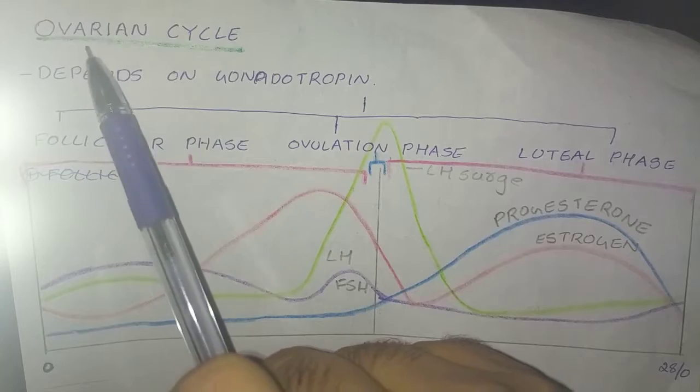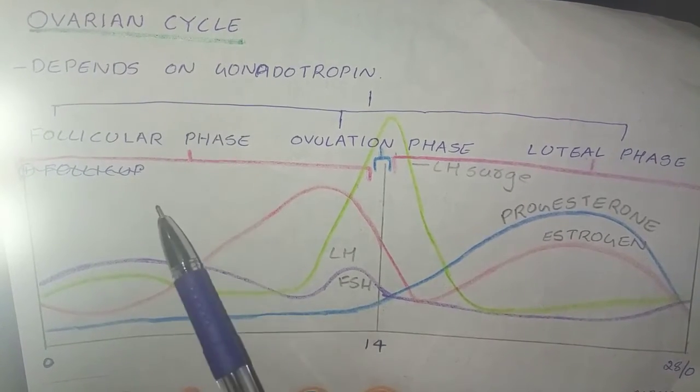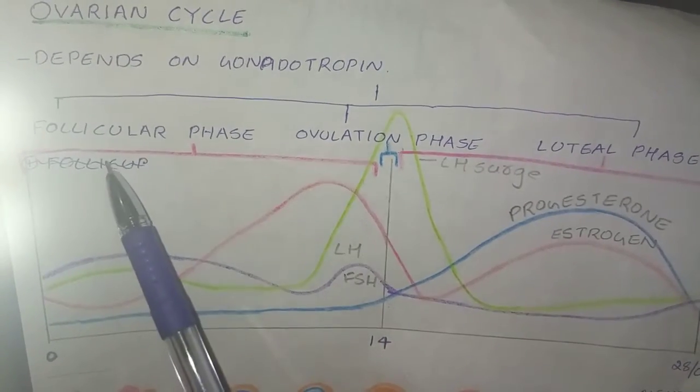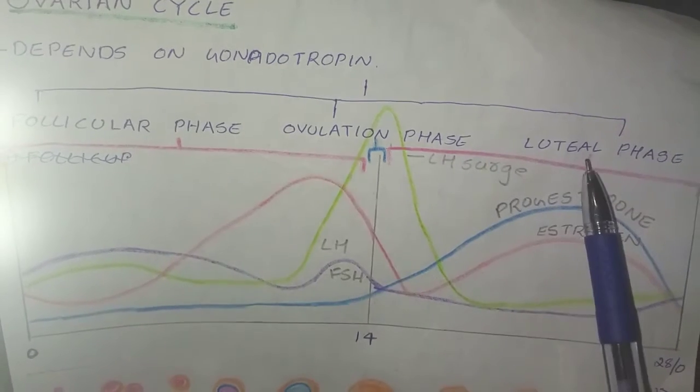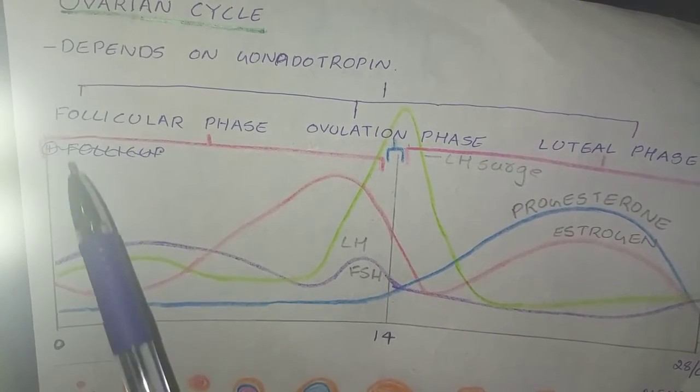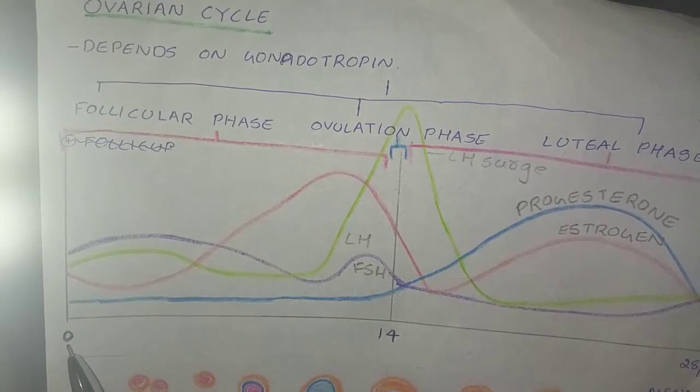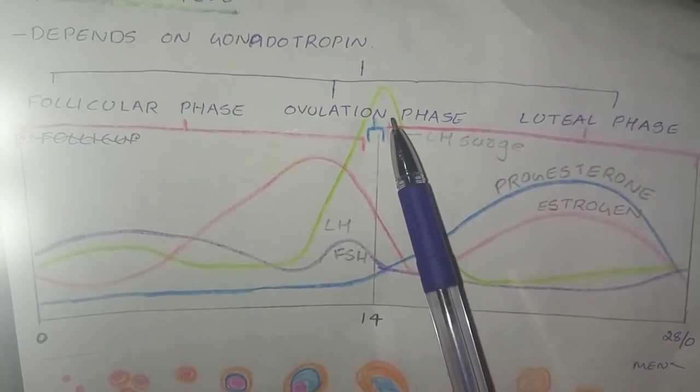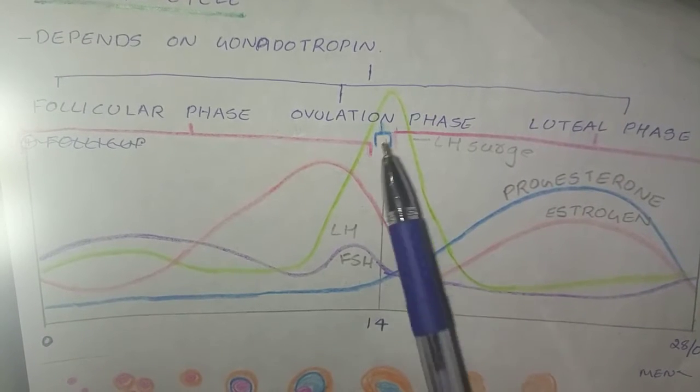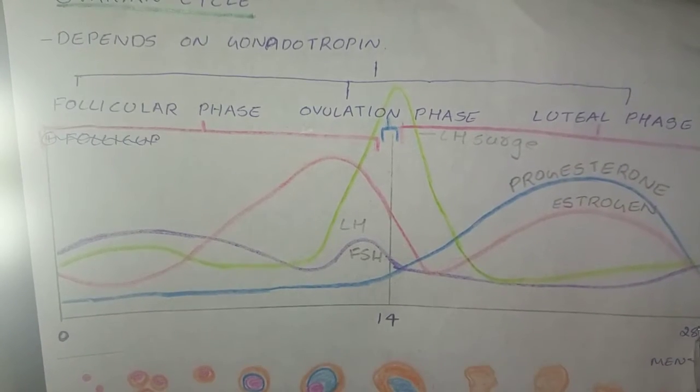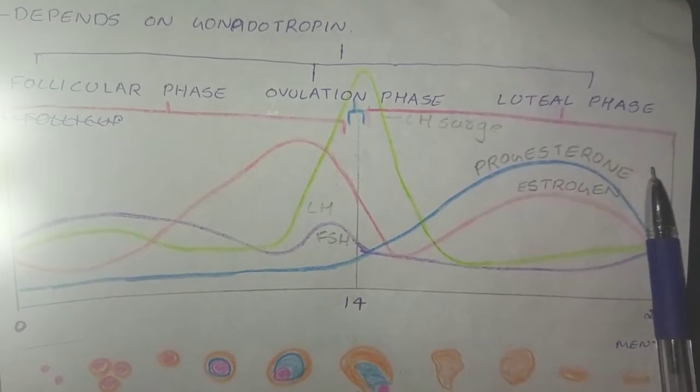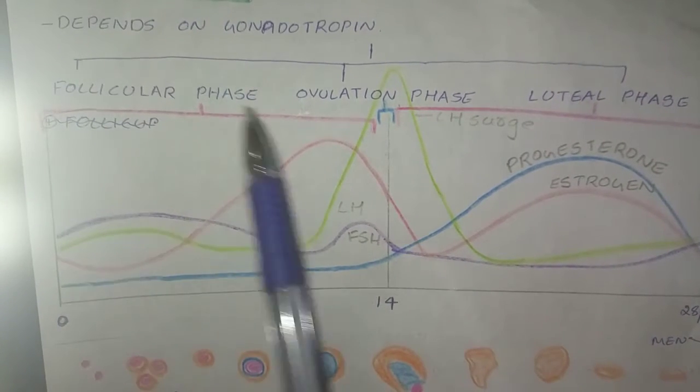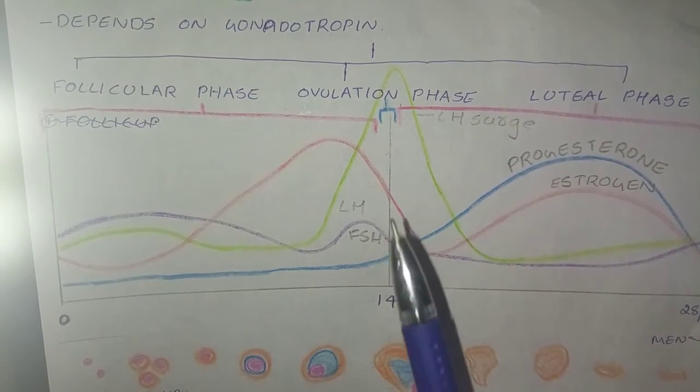Now the ovarian cycle has been divided into three parts: the follicular phase, ovulation phase, and luteal phase. The follicular phase is divided from day 0 to the 14th day, and on the 14th day the ovulation occurs. Then 14th to 28th day is the luteal phase. Now let's discuss these phases more clearly.